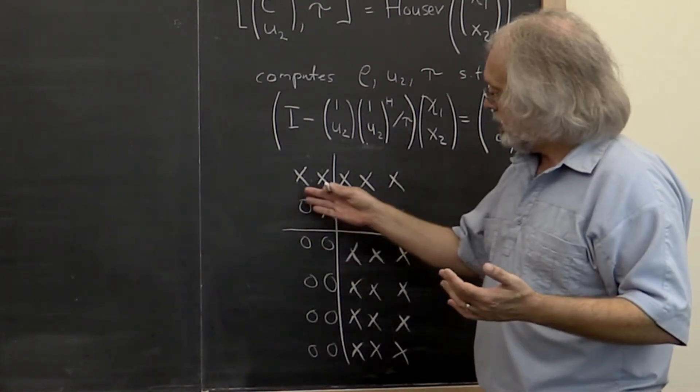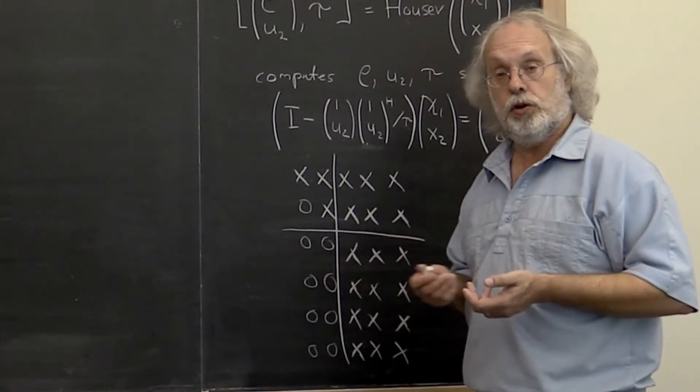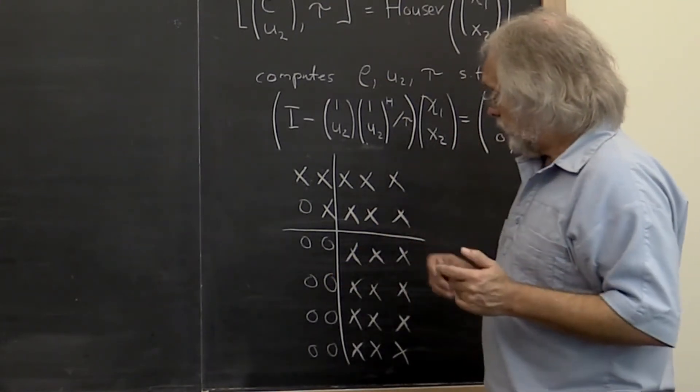A detail is that we may have used these zeros to store the Householder vectors that we computed previously. But let's not worry about that.